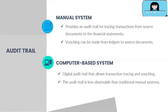In a computer-based system, the audit trail is digital. The digital audit trail allows transaction tracing and vouching similar to a manual system; however, the audit trail is less observable than in a traditional manual system. You need to understand how the computer functions — at what point the transaction is initiated in the system, what master files are updated once transactions are processed, and what point, for example when the user clicks save or post, the transactions are posted to the master files. You also need to understand the data that can be used as an audit trail, such as posting log numbers.